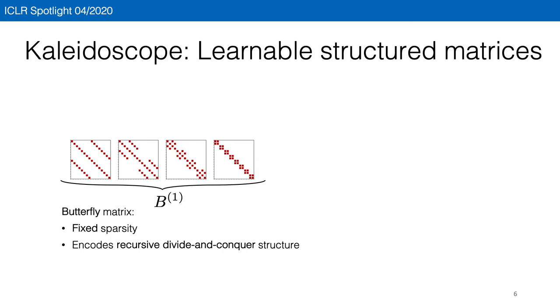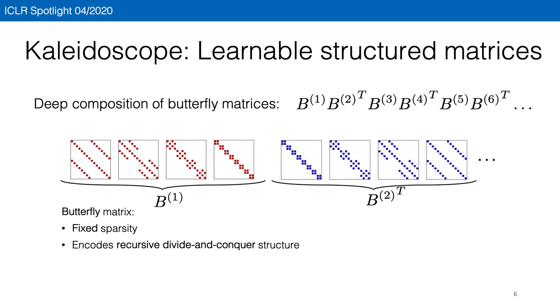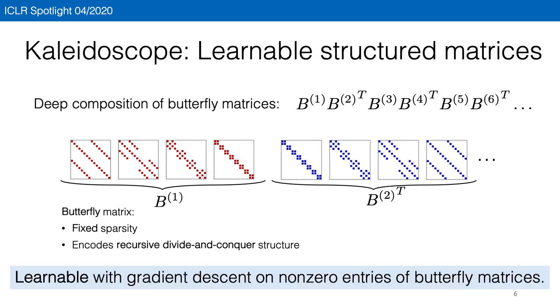In particular, we'll use butterfly matrices as a building block. These are products of sparse matrices with a special sparse pattern that is fixed, and they encode the recursive divide and conquer structure. So we propose kaleidoscope matrices as deep composition of butterfly matrices. And because the sparsity pattern is fixed, this is trainable with, for example, gradient descent on just the non-zero entries of the butterfly matrices.